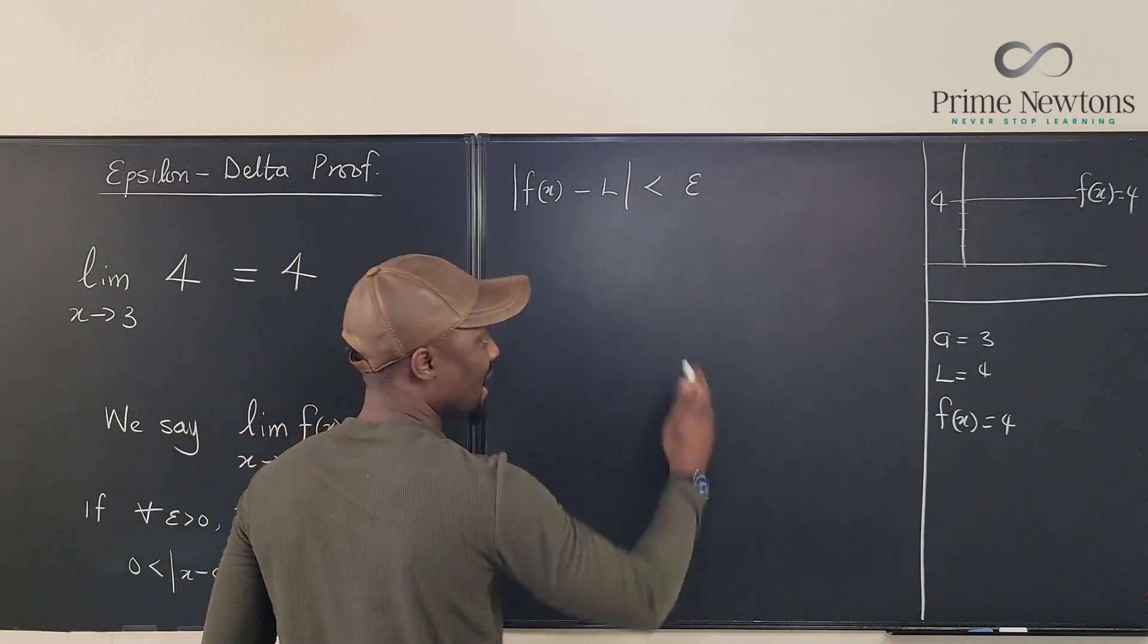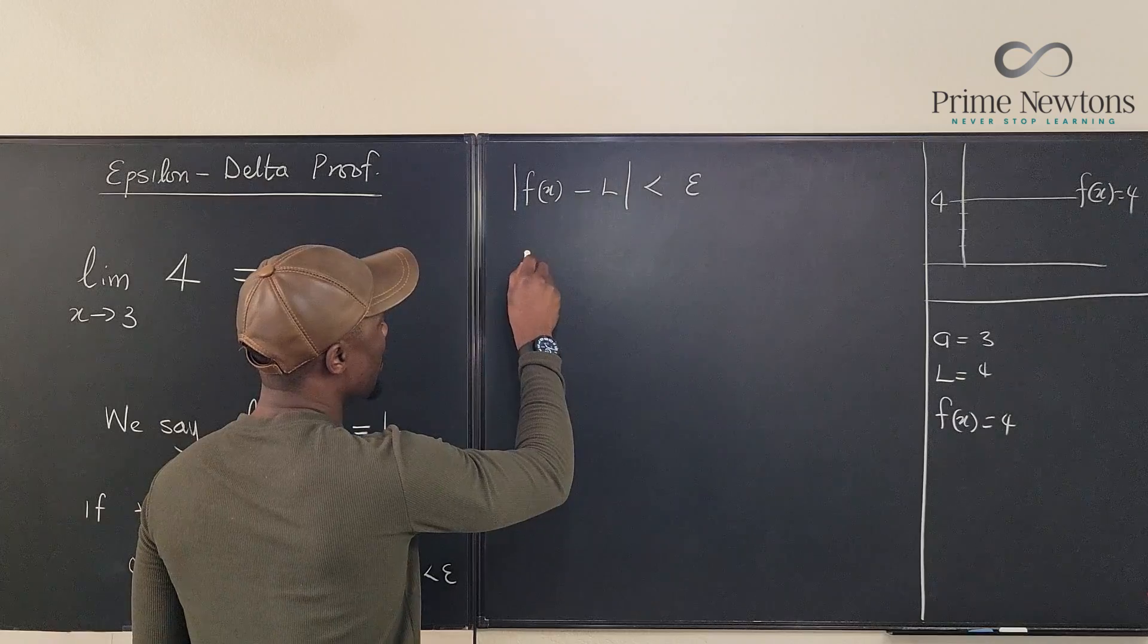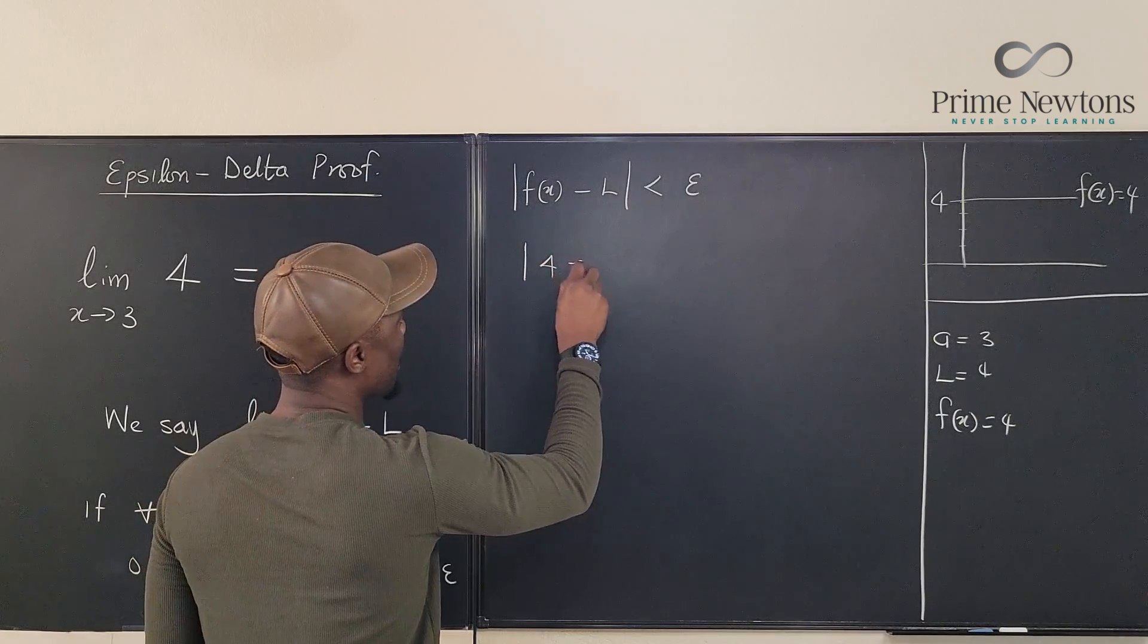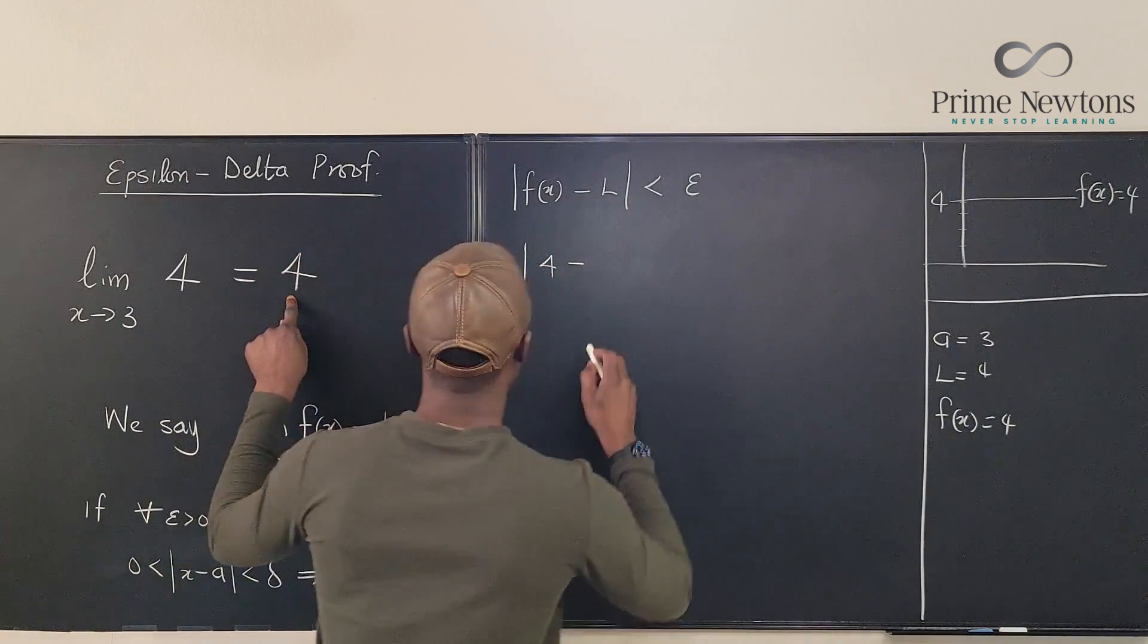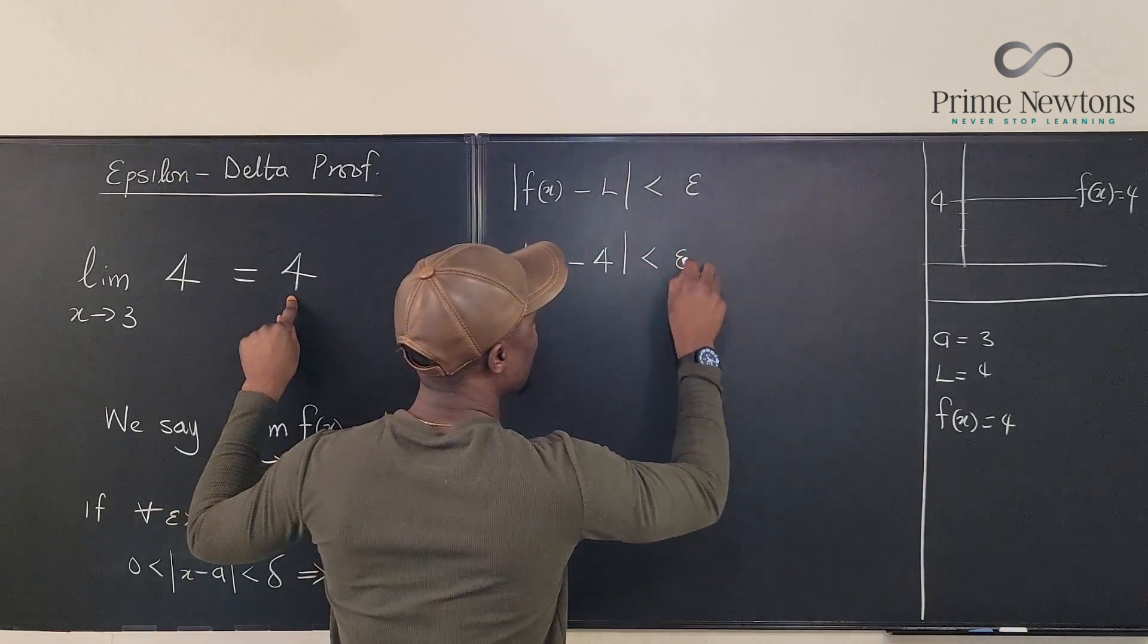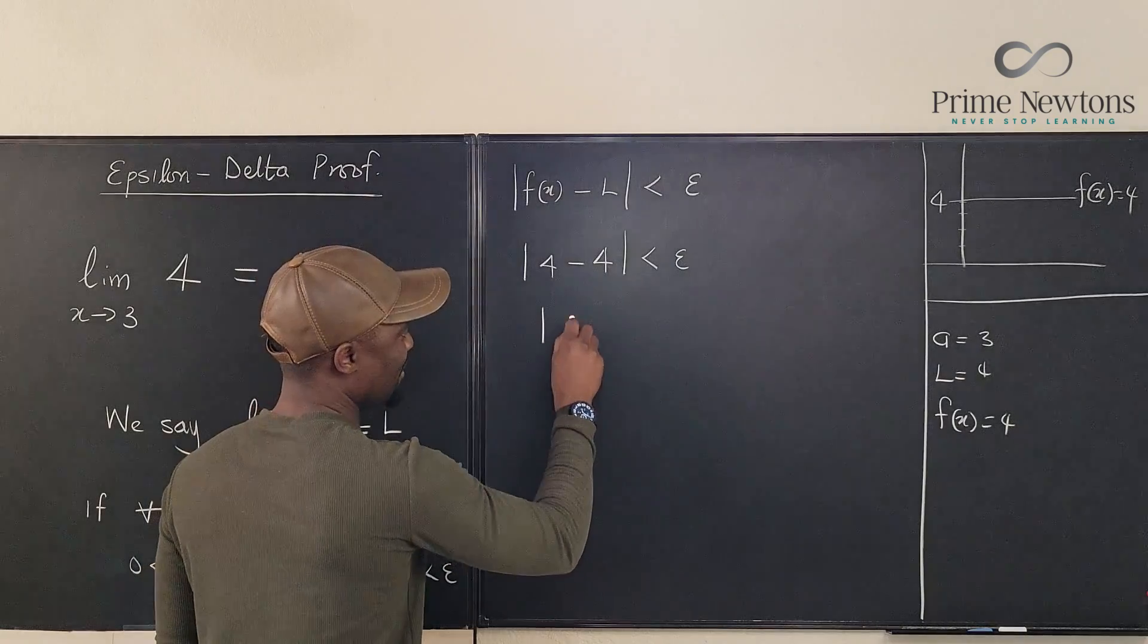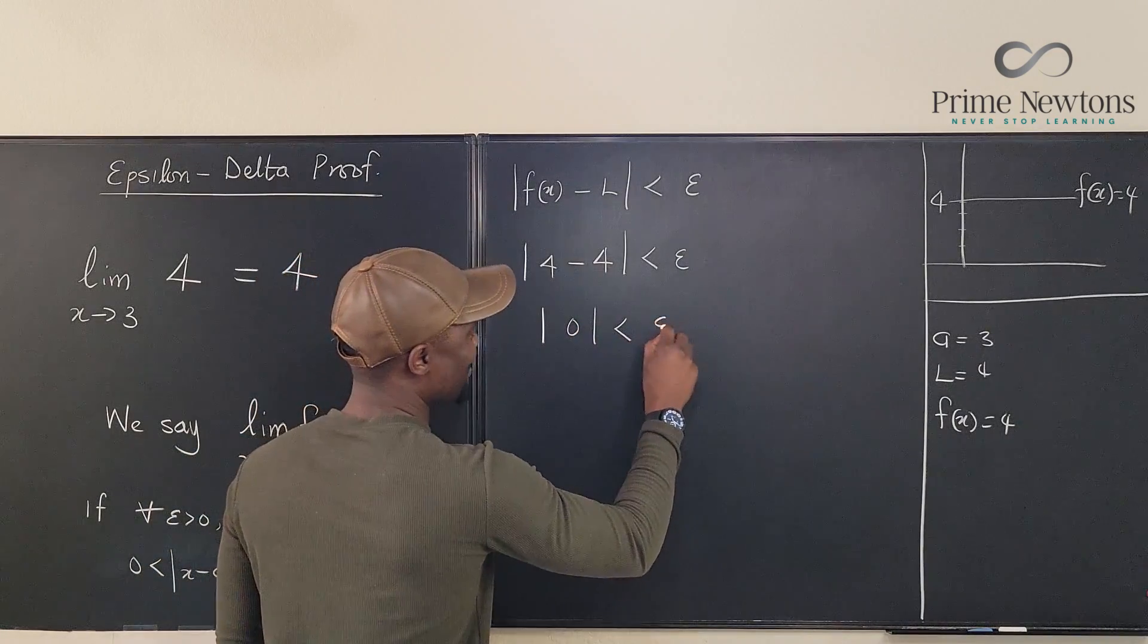We start our proof. We're going to say |f of x minus L| is less than epsilon. We're going to try to use this sentence to guess our delta. So we're going to go here and say that we have the absolute value of 4 minus what's our limit? Our limit is 4, is less than epsilon. And what does that mean? It means that the absolute value of 0 is less than epsilon.